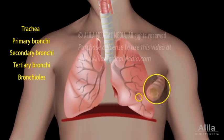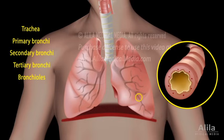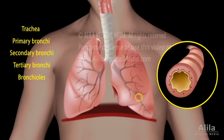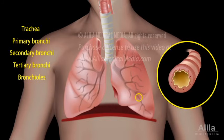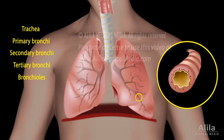The airways have a layer of smooth muscle in their wall which enables them to constrict or dilate. In response to the body's higher demand for air, such as during exercise, the airways dilate to increase airflow. On the other hand, in the presence of pollutants in the air, the airways constrict to minimize their entry to the lungs.